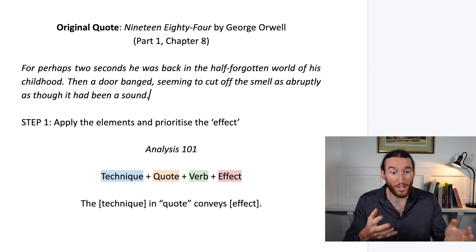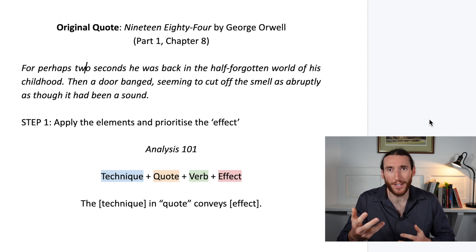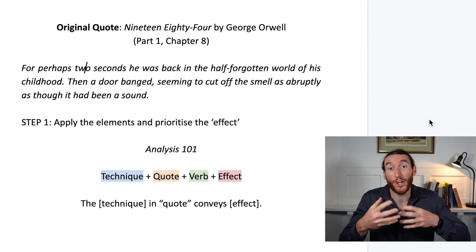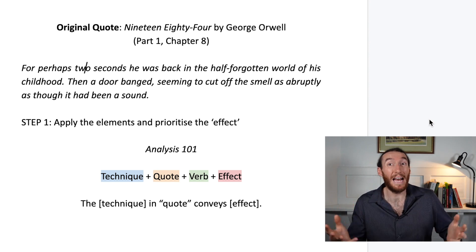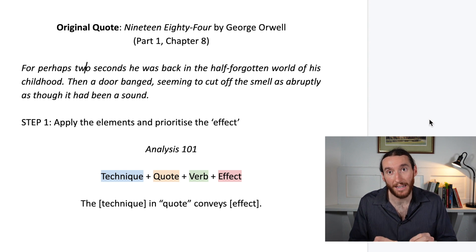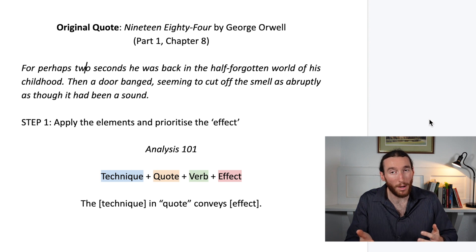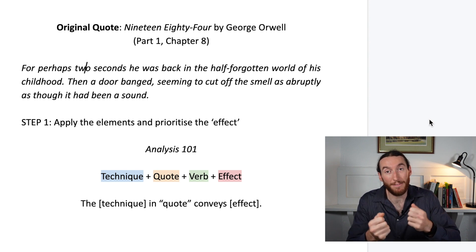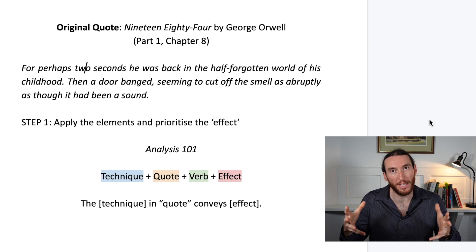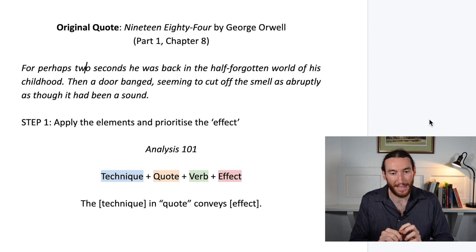So in terms of this quote, what's our technique? I'm going to focus on 'for perhaps two seconds' — it's uncertain language, not exactly, not definitely, just perhaps. That's called low modality. There's a use of low modal language here that I'm going to talk about because I think it's important. Why 'perhaps two seconds'? Why don't we know for sure? Because nothing is known. It plays into the idea of memory being very fragmented, of reality being very distorted and uncertain, because this whole novel is about totalitarian control and manipulating the psyche.